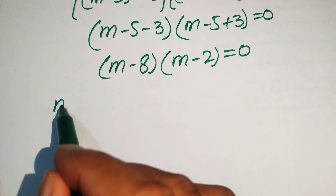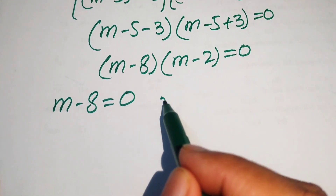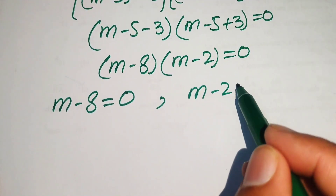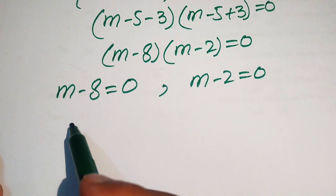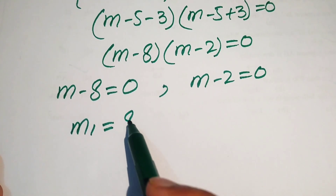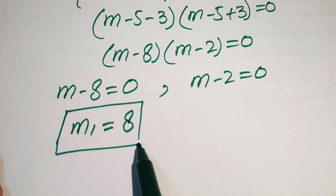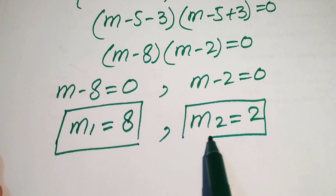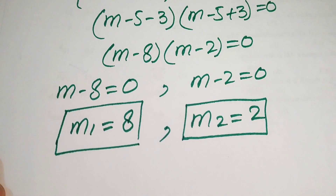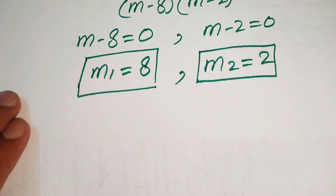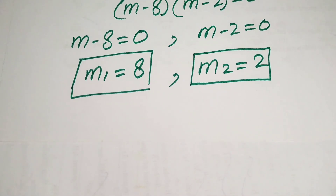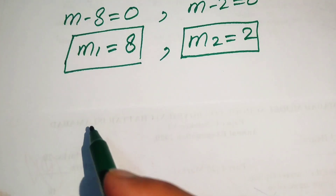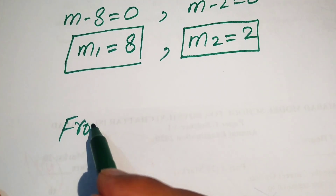Setting each factor to zero gives m minus 8 equals 0 and m minus 2 equals 0, so the first real root is m₁ equals 8 and the second real root is m₂ equals 2. Since the equation is of order 4, there are 4 roots total, so we find the remaining two from equation 2.